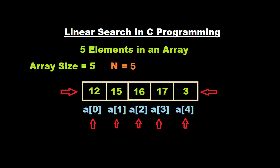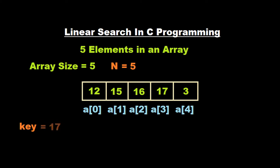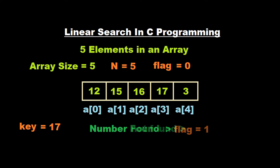Now, how do we perform the linear search? For that, we have to take a number to search — in our case, we will search for the number 17. We take the variable key, and the value of key here will be 17. We also take another variable flag, which will be initialized to 0. As soon as we find our number, the flag value will be updated to 1. But if we don't find the number, the flag will remain 0.